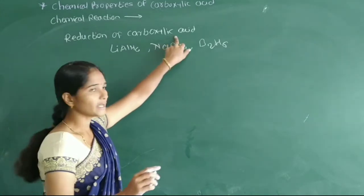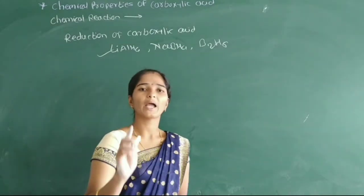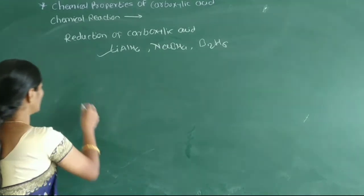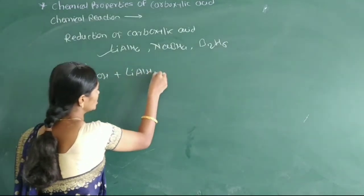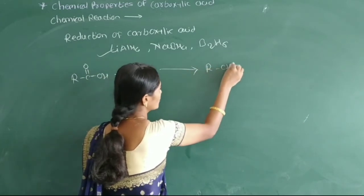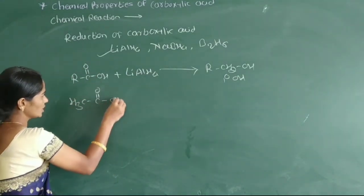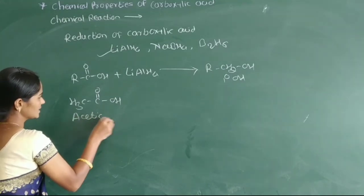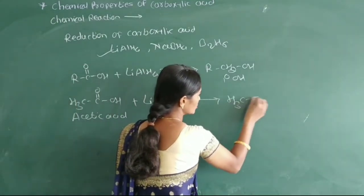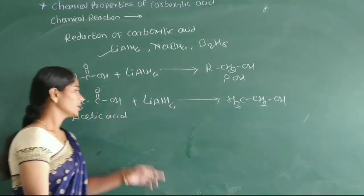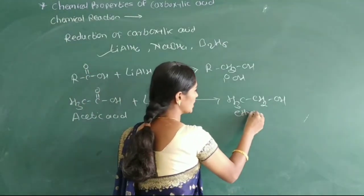In the reduction of carboxylic acid using lithium aluminium hydride (LiAlH4), which is a source of hydride, the acid RCOOH is converted into a primary alcohol. For example, CH3COOH (acetic acid) reacts with LiAlH4 to form CH3CH2OH, that is ethyl alcohol, as a primary alcohol.